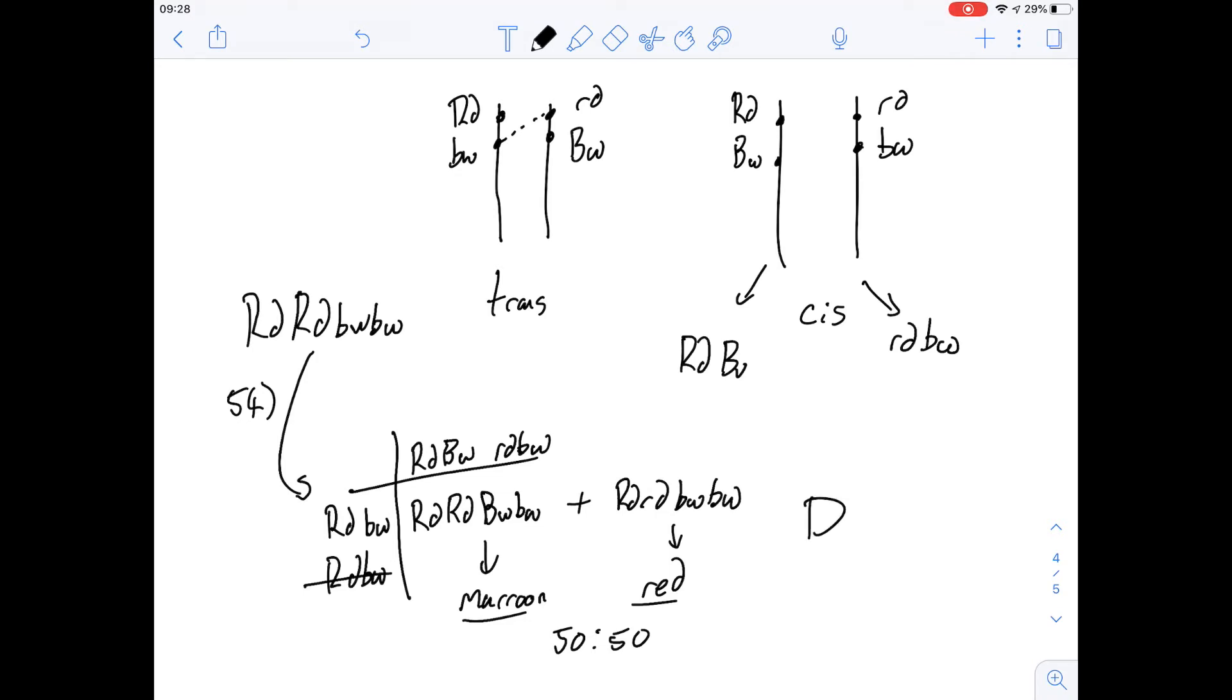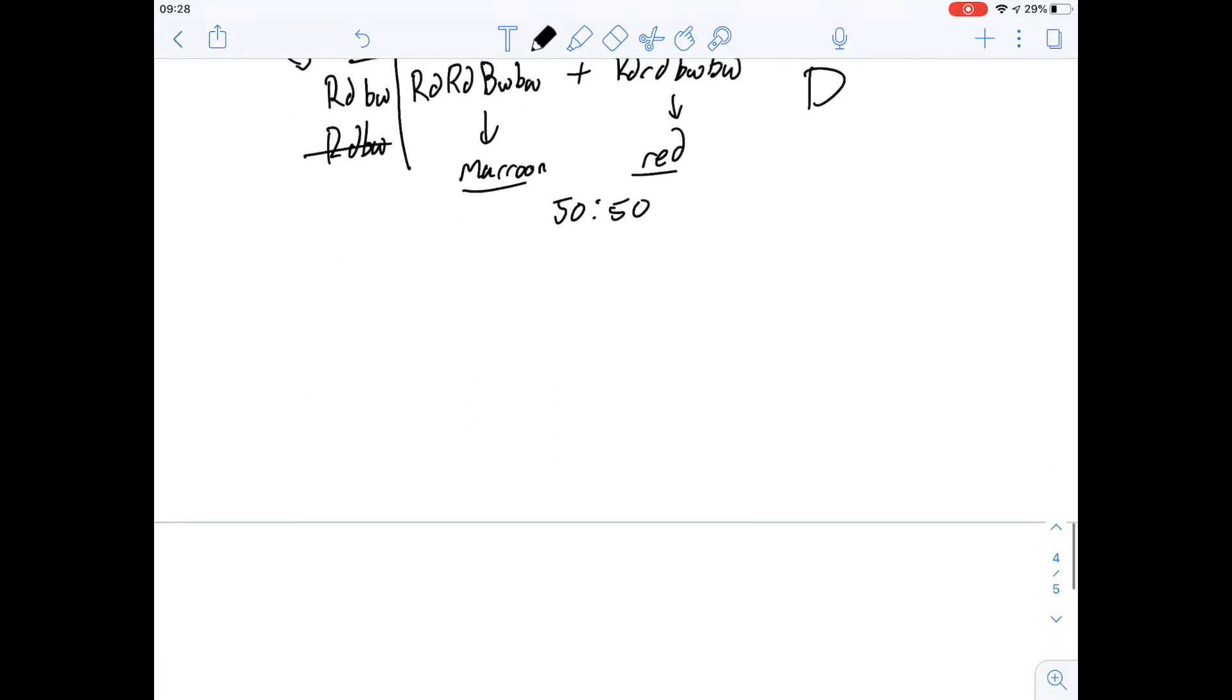And that's going to be answer D then in this case. So 54 is going to be D. Maroon-eyed and red-eyed in equal proportions.